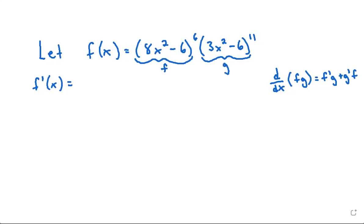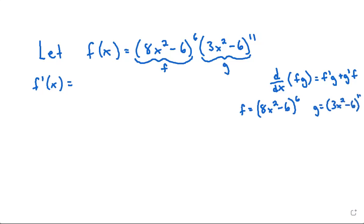Let's work on the side to figure out our f prime and g prime, because they're a bit complex. Our f is 8x squared minus 6 to the power of 6, and our g is 3x squared minus 6 to the power of 11.